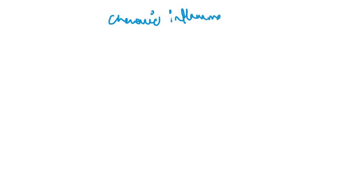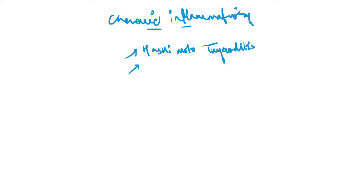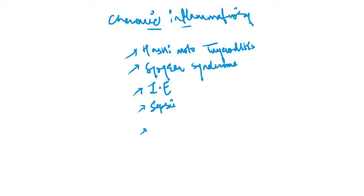What happens in the case of anemia of chronic disease is that it is associated with some chronic inflammatory conditions — prolonged conditions in which there is inflammation within the body. These include Hashimoto's thyroiditis, where there is inflammation within the thyroid gland due to antibodies against thyroid tissue; Sjögren's syndrome, where there is destruction and inflammation within the salivary glands due to autoantibodies; infective endocarditis, where inflammation occurs in the endocardium involving the heart valves; and conditions like sepsis or cancer, in which there is also inflammation within the body.